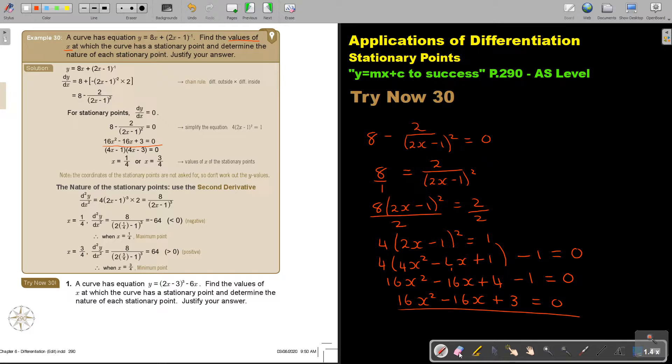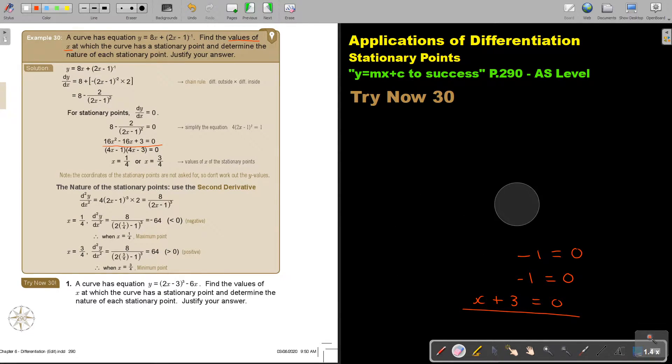Now, as soon as I reach that stage, I'm just going to factorize and I get this. I put it equal 0. I get this. So find the X values of the stationary points. Now note, the coordinates of the stationary points are not required. So you don't have to work out the Y values. Very important. But you must find the nature of the stationary points.